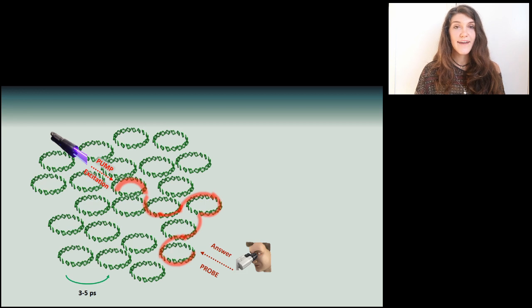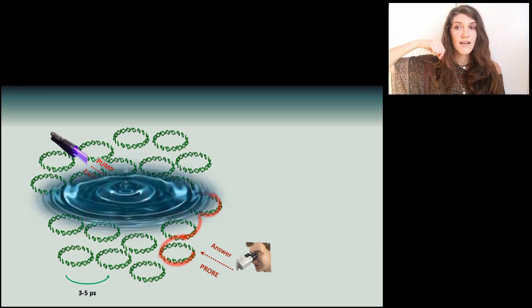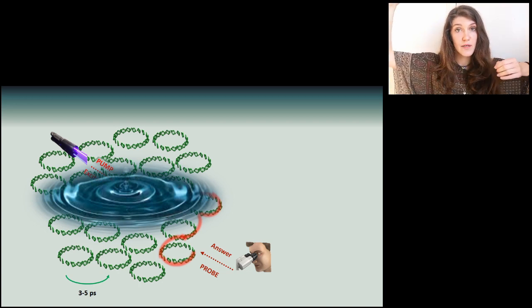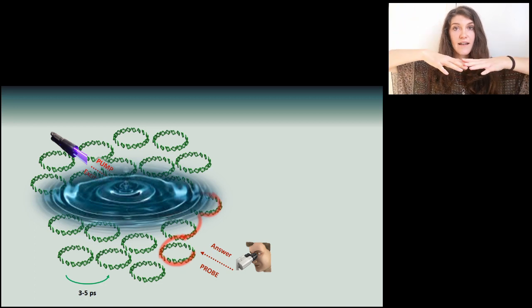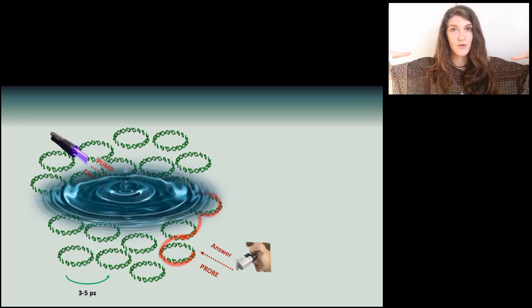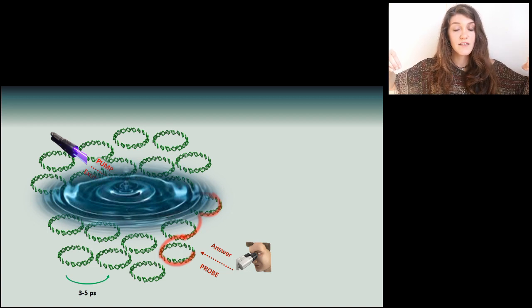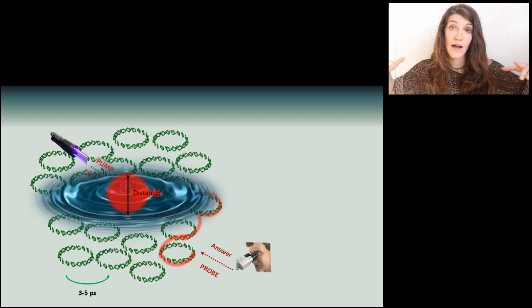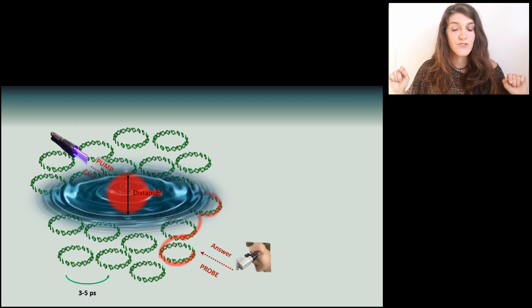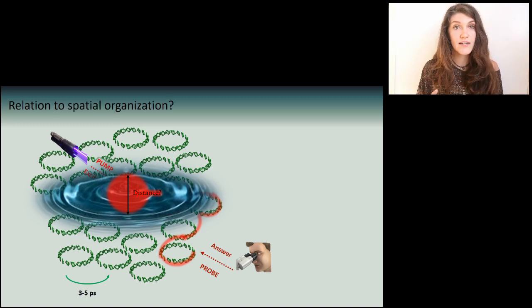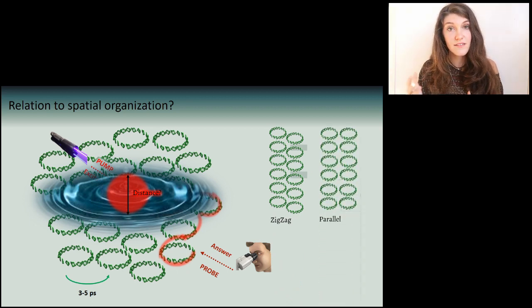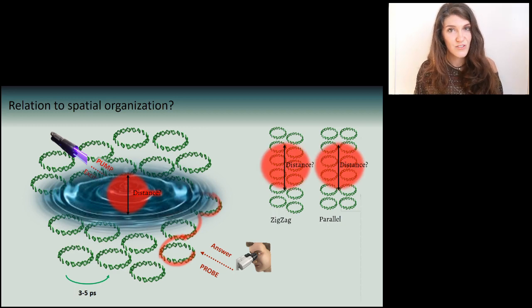So, exactly as when a drop of water falls into a lake, and you can see these waves spreading all over the surface of the water, I send a pulse, a pump pulse, and then I study how much this energy spread over the sample. And the question that I ask myself is, how far does this energy go? And with how much efficiency? And moreover, what does change if I change the spatial organization of these molecules? So, if I put them, for example, in a parallel way, or in a zigzag way, how does this energy spread change, this distance change, and this efficiency change?